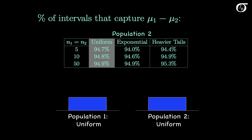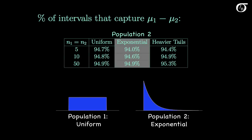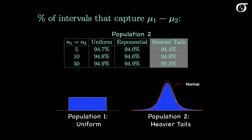Now let's look at when both populations are non-normal. When population 1 is uniform and population 2 is also uniform, the t procedure still works quite well even for small sample sizes. If one is uniform and one is exponential, it's slightly worse — coverage around 94% for very small sample sizes — but it quickly moves towards 95% as sample sizes increase. If population 2 has heavier tails than the normal distribution, the situation isn't too bad either, with percentages pretty close to 95% even for small sample sizes.